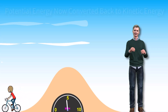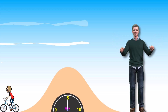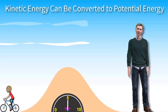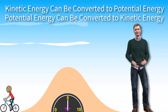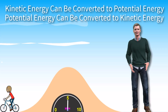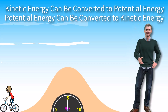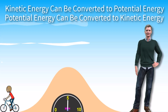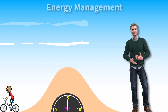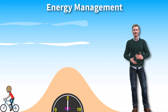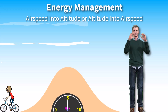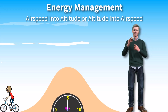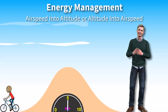The essence of this lesson is that if you have kinetic energy, you can convert that to an equivalent amount, or nearly so, of potential energy. When we speak of energy management with respect to airplanes, we mean that airspeed can be converted to altitude or altitude can be converted to airspeed. How much the airspeed or altitude changes depends on the airspeed and altitude you start out with.